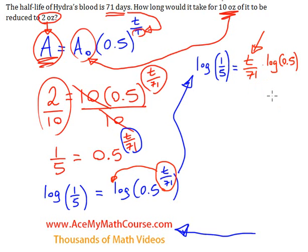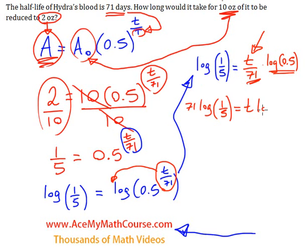Now I want to solve for t. To do that, I need to get rid of the 71 and the log 0.5 from the right-hand side, sending them both to the left-hand side. I'll multiply both sides by 71, giving 71 times log of one-fifth equals t times log of 0.5. Then I'll divide both sides by log 0.5, or log one-half, and those cancel out.